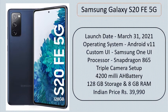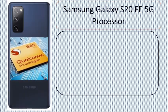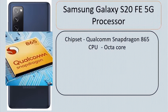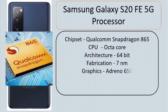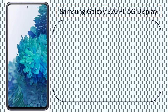Indian Price: RS 39,990. Samsung Galaxy S20 FE 5G Processor. Chipset: Qualcomm Snapdragon 865, Octa-core Architecture, 64-bit. Fabrication: 7nm. Graphics: Adreno 650. RAM: 8GB. RAM Type: LPDDR5.